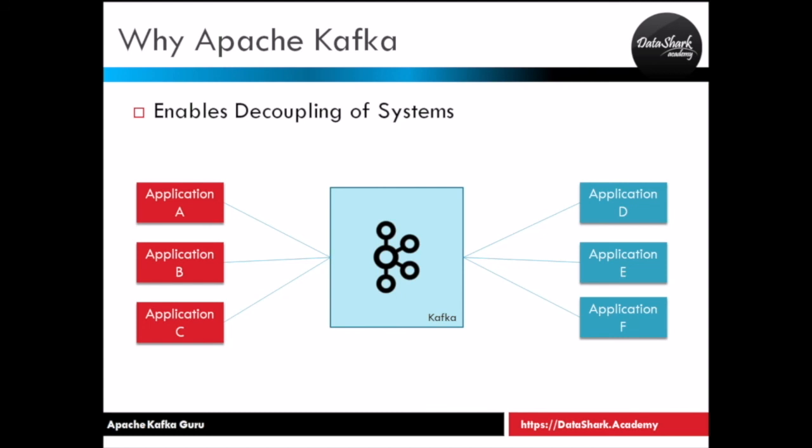This is what decoupling of systems means, and it removes the bottleneck from your entire architecture. This is one example of good design. Keep this in mind while you are designing your applications — whether it's Kafka or not, try to make your entire application as decoupled as possible. I'll see you in the next class.